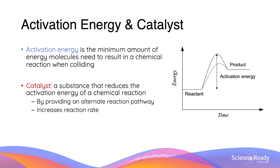Activation energy is the minimum amount of energy that molecules need to result in a chemical reaction when colliding — that is, the energy from the reactants up to the top of the peak. One way to decrease this activation energy is to use a catalyst. A catalyst is a substance that reduces the activation energy of a chemical reaction by providing an alternate reaction pathway.